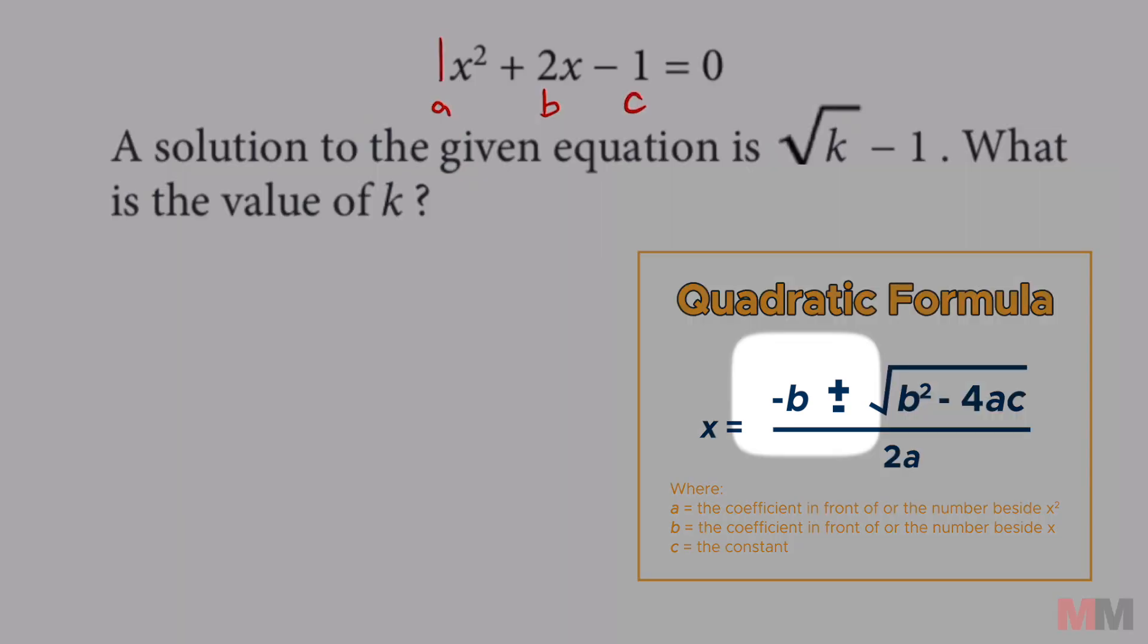That's going to be negative b, so negative 2, plus or minus the square root of b squared, 2 squared, minus 4ac, 4 times 1 times negative 1, all over 2a, 2 times 1.